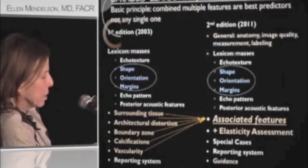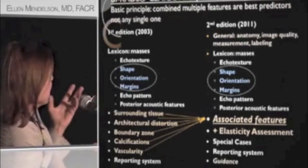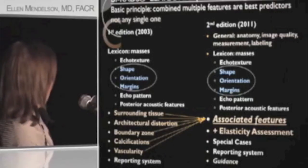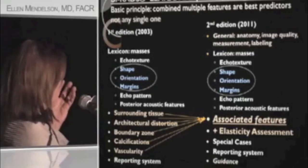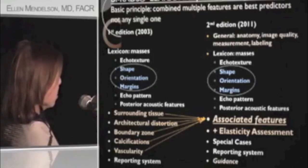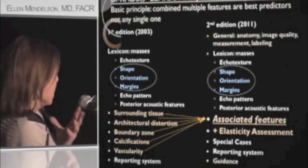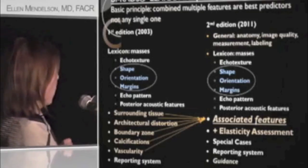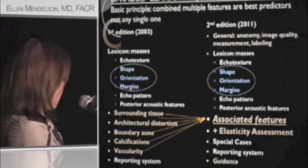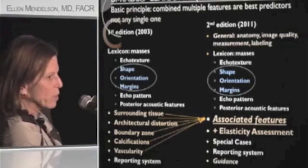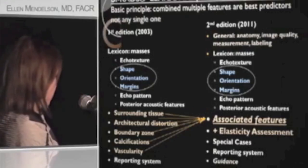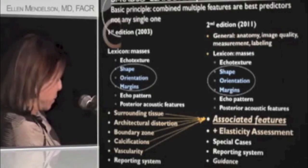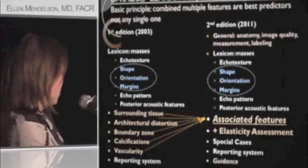I wanted to show you what BI-RADS in its expanded, reorganized form might look like. On the left is what's included in the 2003 version. The three major morphologic features — shape, orientation, and margins — remain. We've added a section on general anatomy, image quality, measurement, and labeling. The major difference is the new associated features group, where we've added elasticity assessment alongside surrounding tissue, architectural distortion, boundary zone, calcifications, and vascularity. We have a large guidance section with reasonable answers to questions related to BI-RADS.